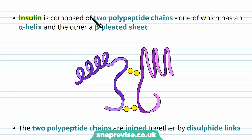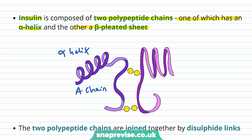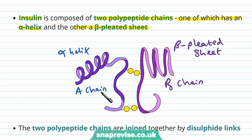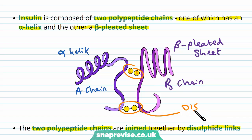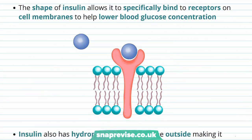Looking at the structure of insulin, it is composed of two polypeptide chains. One has an alpha helix and is called the A chain; the other has a beta pleated sheet and is called the B chain — alpha goes with A, beta goes with B. The two polypeptide chains are joined together by disulfide links, where R groups of amino acids containing sulfur atoms form disulfide bridges. The globular shape of insulin allows it to specifically bind to insulin receptors on the membranes of certain cells, and this helps lower blood glucose concentration.